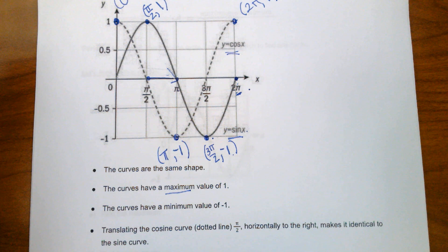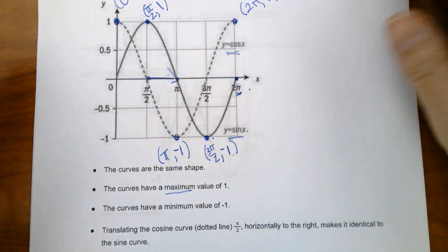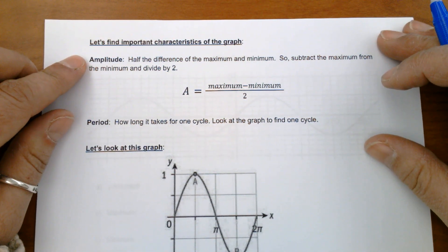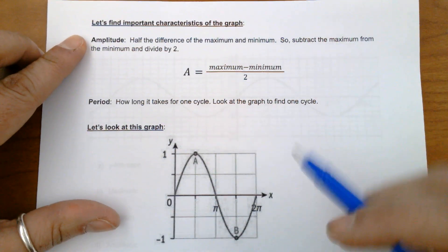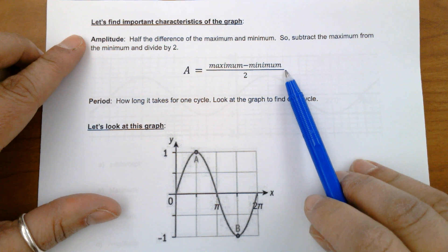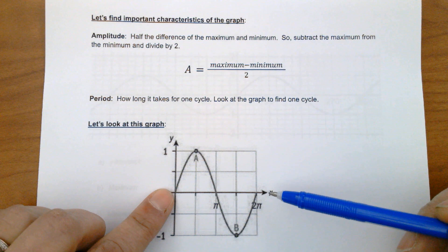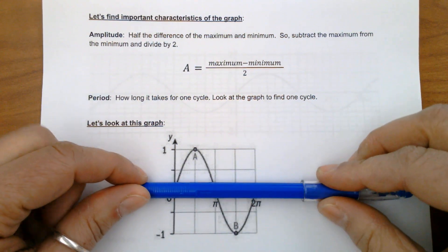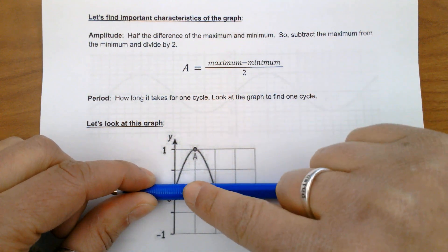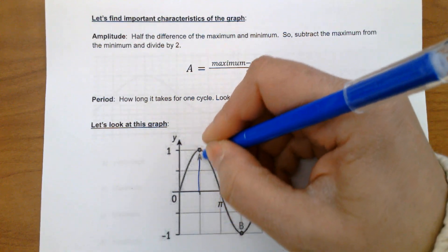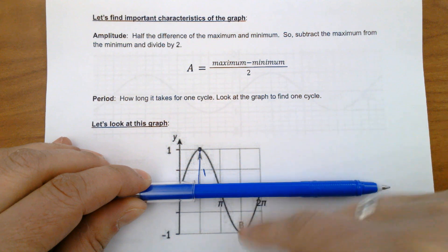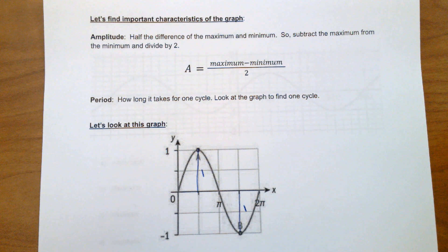For different functions, we're going to recognize changes to the period, the height, the maximum and the minimum. Let's get some vocabulary down. Amplitude involves looking at the maximum and the minimum — it's half the distance between them. The formula is: max minus min, divided by two. Looking at this graph, the x-axis cuts the curve in half. From the x-axis to the maximum is one unit tall, and from the x-axis down to the minimum is also one unit tall. That's the amplitude.